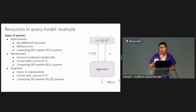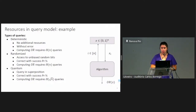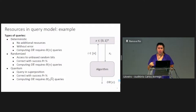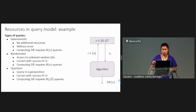There are several ways to define the query model, and I'm going to walk you through values in an example. Let's say that the function that we need to evaluate is the function OR, so we need to output one if and only if there is at least one one in the input. The first model is the deterministic query model. In that model, the algorithm has no additional resources and has to output the correct value of the function without any error for all inputs. It's easy to see that in the worst case scenario, the algorithm has to read the whole input in order to evaluate the function correctly, so computing OR in that model requires omega of n queries.